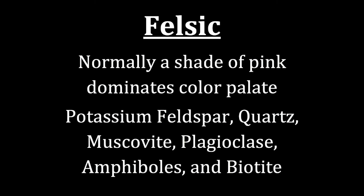The last magma type we will identify is felsic. When we look at rocks that have a felsic magma type, they're normally a shade of pink dominating the color palette. There can be examples of felsic rocks that are white or very light in color, but you typically see a shade of pink from the potassium feldspar dominating the rock. It also has a large quantity of quartz compared to the other types. You will see muscovite and plagioclase — typically white or very light gray in felsic rocks — and it may have amphiboles and biotite in it as well.